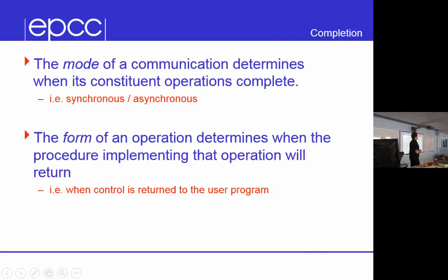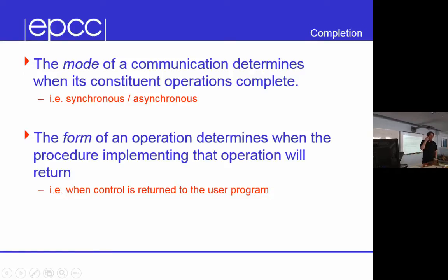There are two concepts in MPI. One is the mode, which we've talked about — a formal definition of when a messaging operation completes. That's synchronous or asynchronous. Sending a letter completes when the letter is in the post box; making a phone call completes when you've spoken to the person and put the phone down. There's also a separate concept, which is the form — when does control return to the user program.